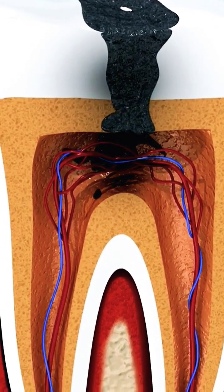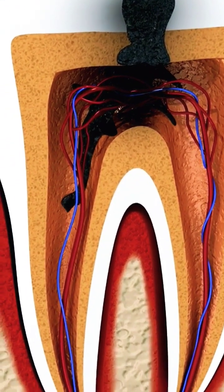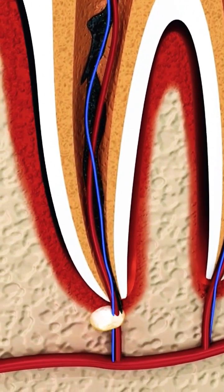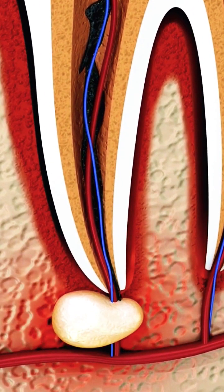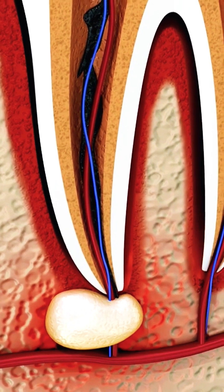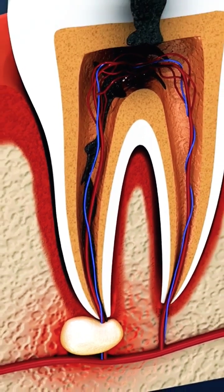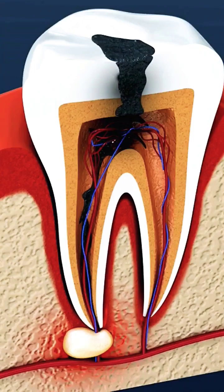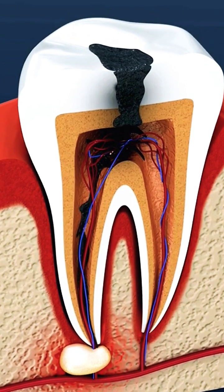An infected root canal occurs when germs in the mouth infiltrate the tooth pulp, which can arise as a result of a cracked or chipped tooth, a broken tooth root, damage to the tooth pulp with or without damage to the tooth surface, repeated dental procedures, or tooth deterioration.